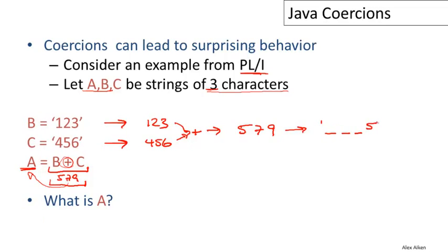It looks like this. There's three blanks followed by 5, 7, 9. And then that string of six characters is converted to a string of three characters. We just take the first three characters. And so the answer is that this program stores a string of three blanks in A, which is probably not what was expected.